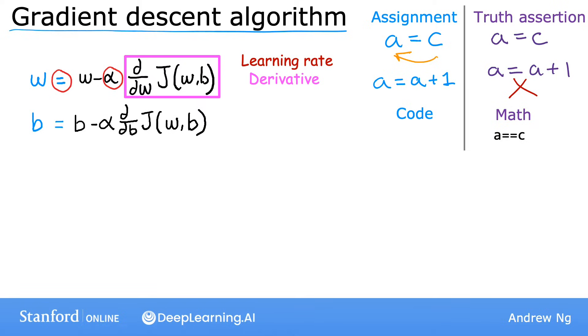So remember in the graph of the surface plot where you're taking baby steps until you get to the bottom of the valley? Well, for the gradient descent algorithm, you're going to repeat these two update steps until the algorithm converges. And by converges, I mean that you reach the point at a local minimum where the parameters w and b no longer change much with each additional step that you take.